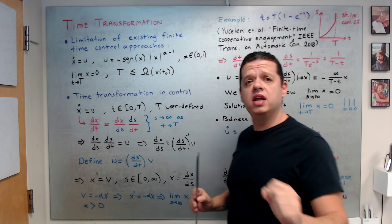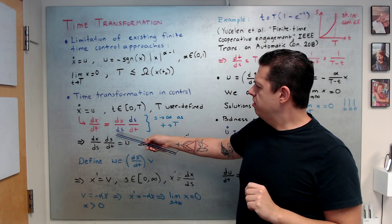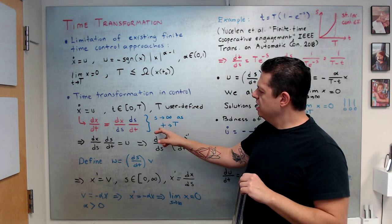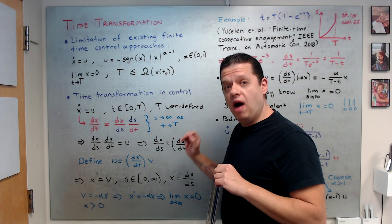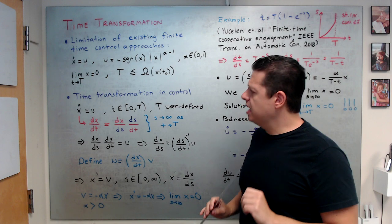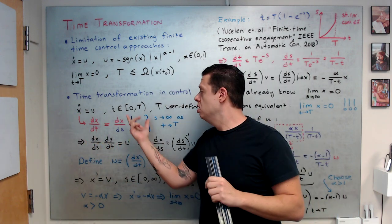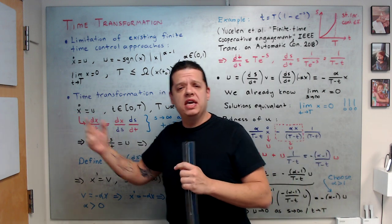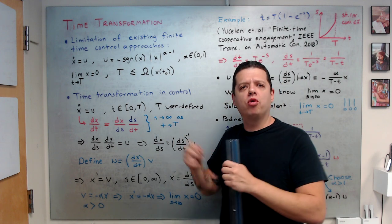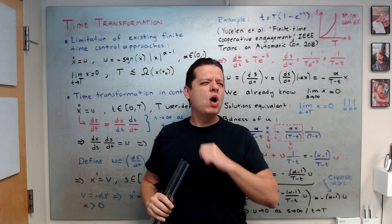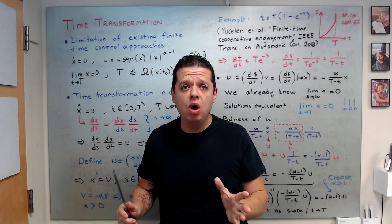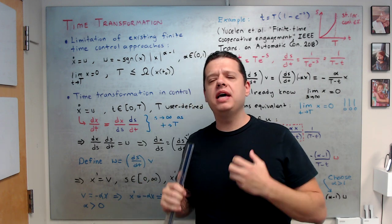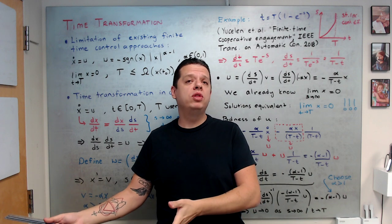Looking at x-dot = dx/dt, I introduce a new time variable s. I want: when t goes to capital T, s goes to infinity. If I can represent the ODE that lives on [0, T] on another interval [0, ∞), then I can apply all existing control techniques developed for the infinite horizon to that new time-transformed ODE.